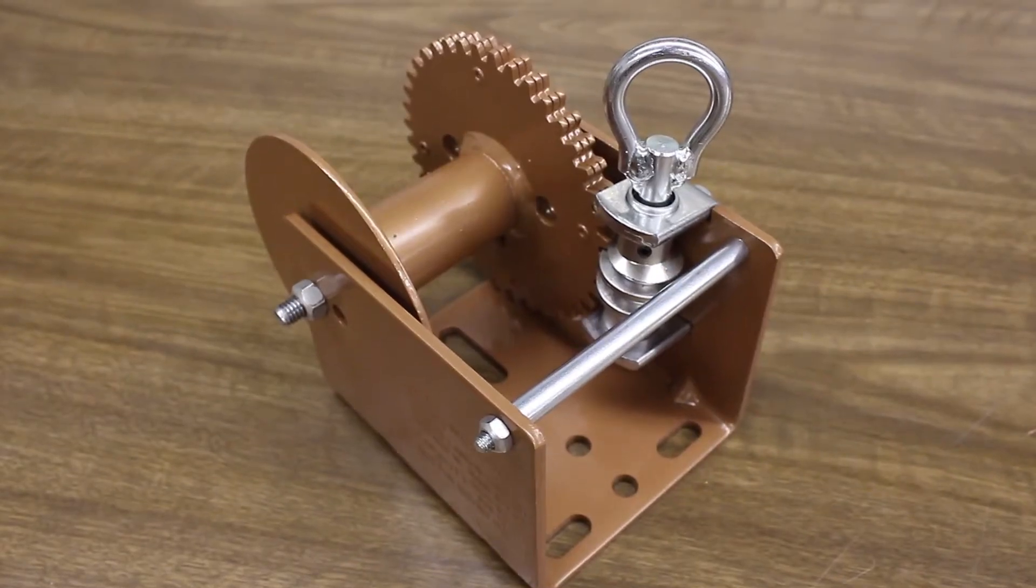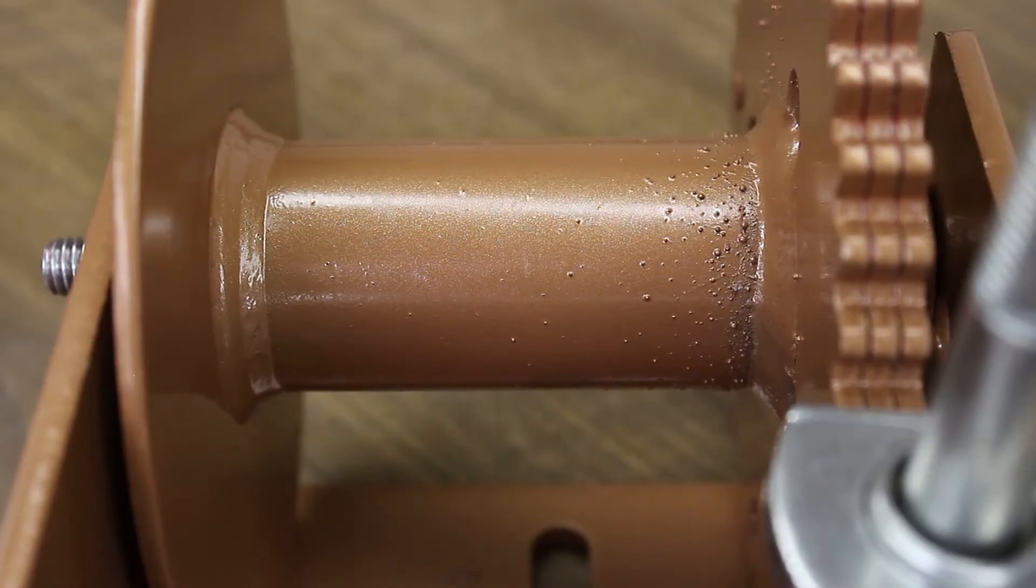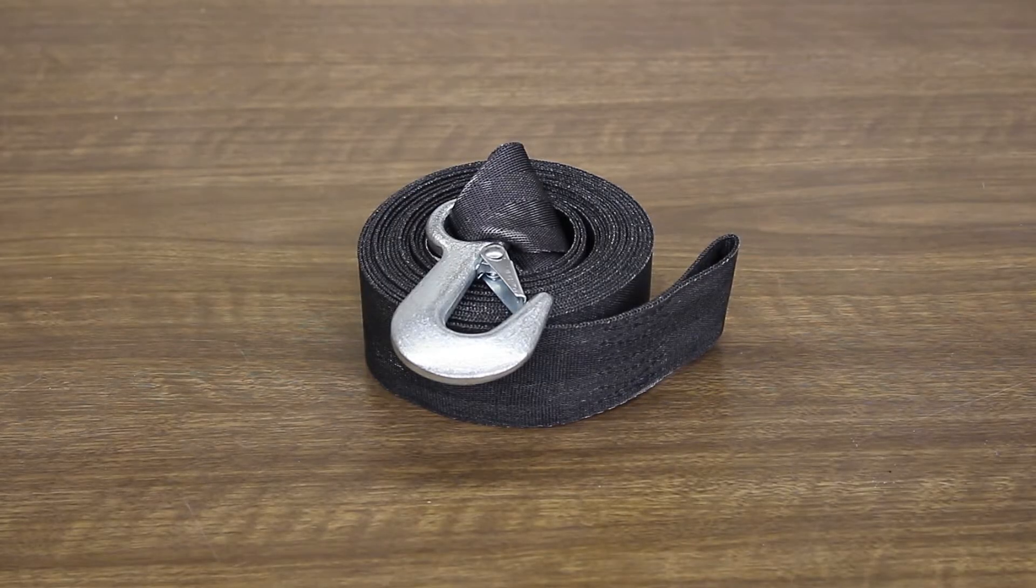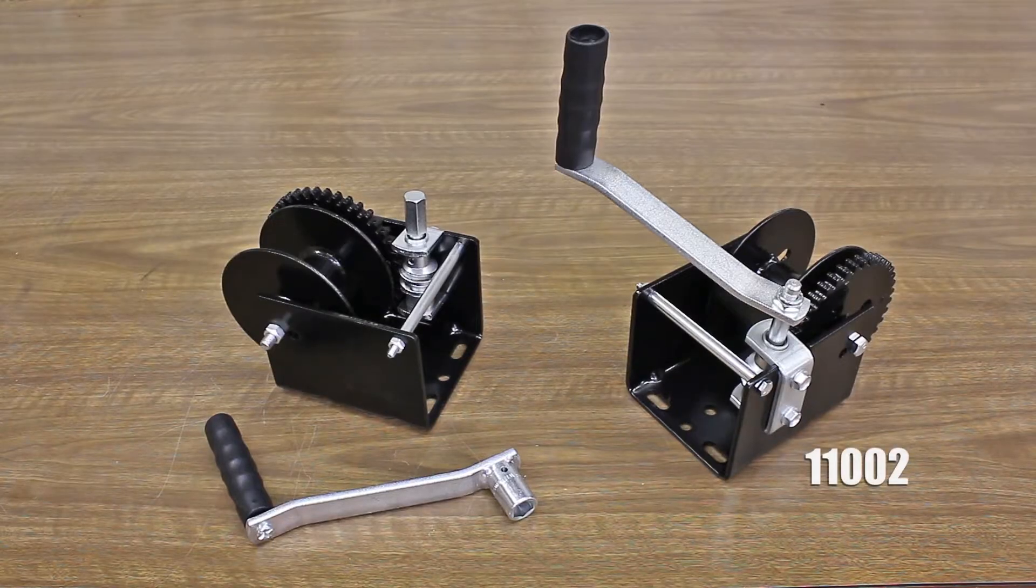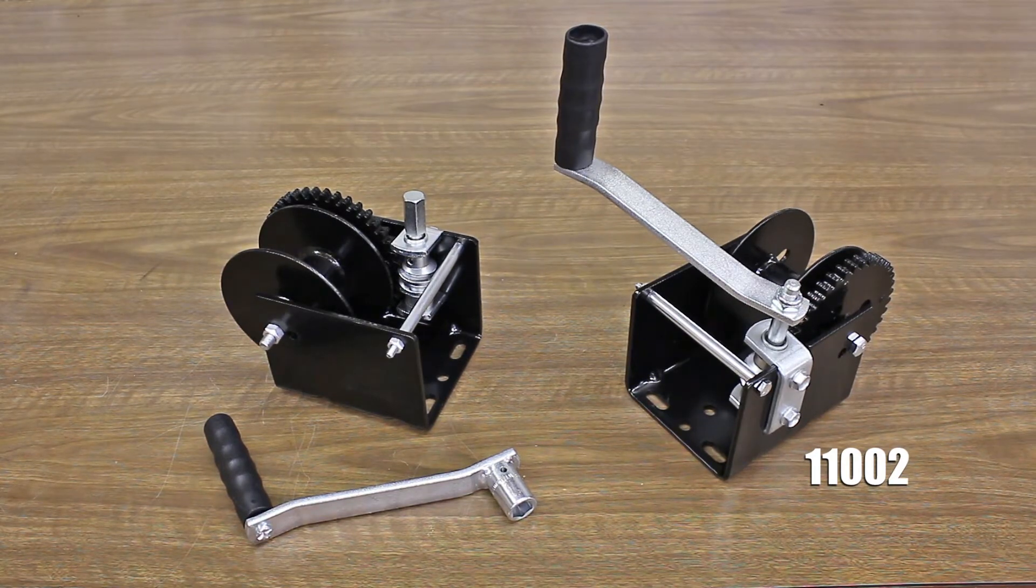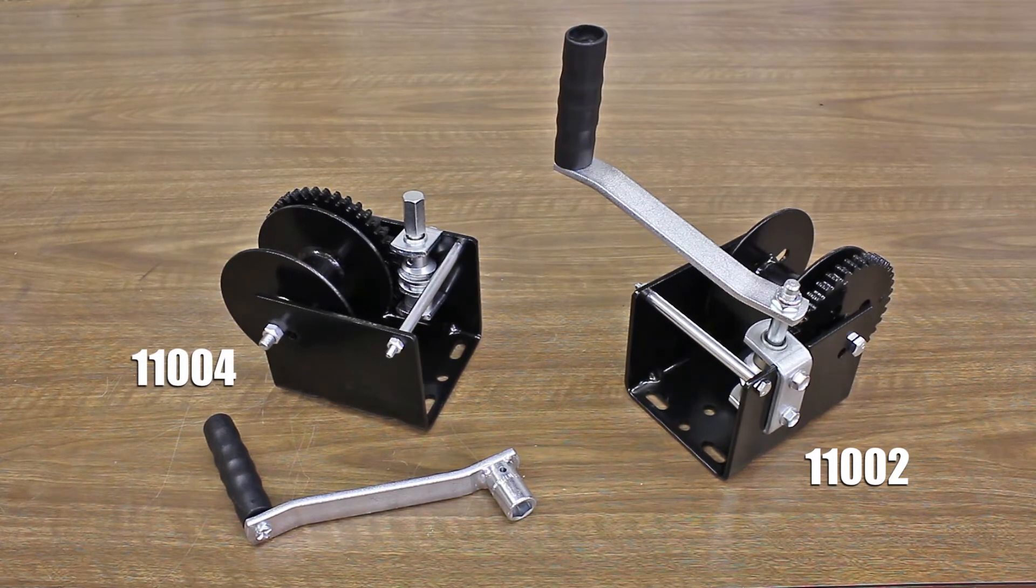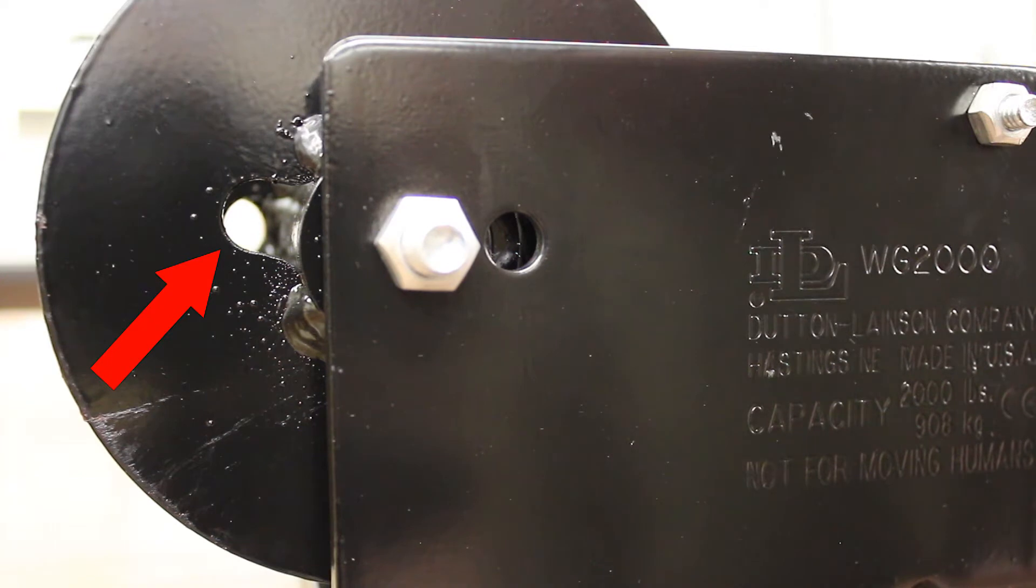While all standard WG2000 reels are wide enough for 2-inch strap, you can only install it on part numbers 11002 and 11004 as they have matching holes drilled into the reel side plate for the strap bolt.